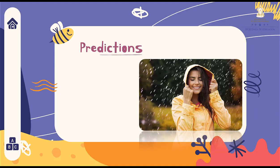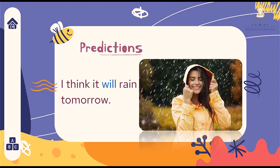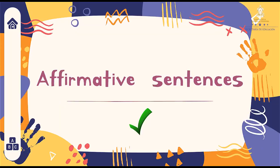Another common use is to make predictions. For example: I think it will rain tomorrow. Yo pienso que lloverá mañana. So, let's see and pay attention to the affirmative sentences in the simple future with the auxiliary will. Vamos a ver y vamos a prestar atención cómo hacer oraciones afirmativas en el futuro simple con el auxiliar will.